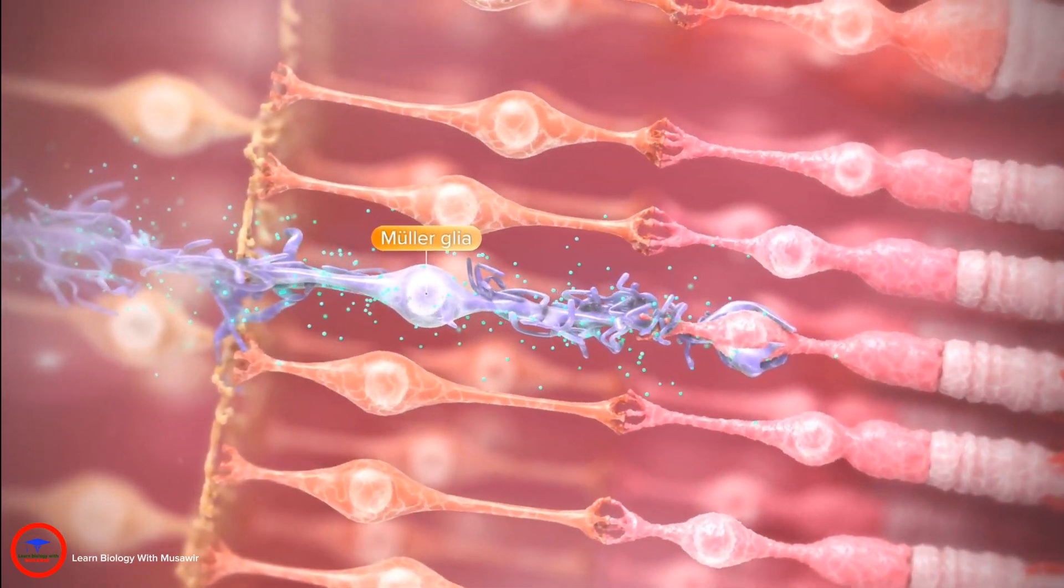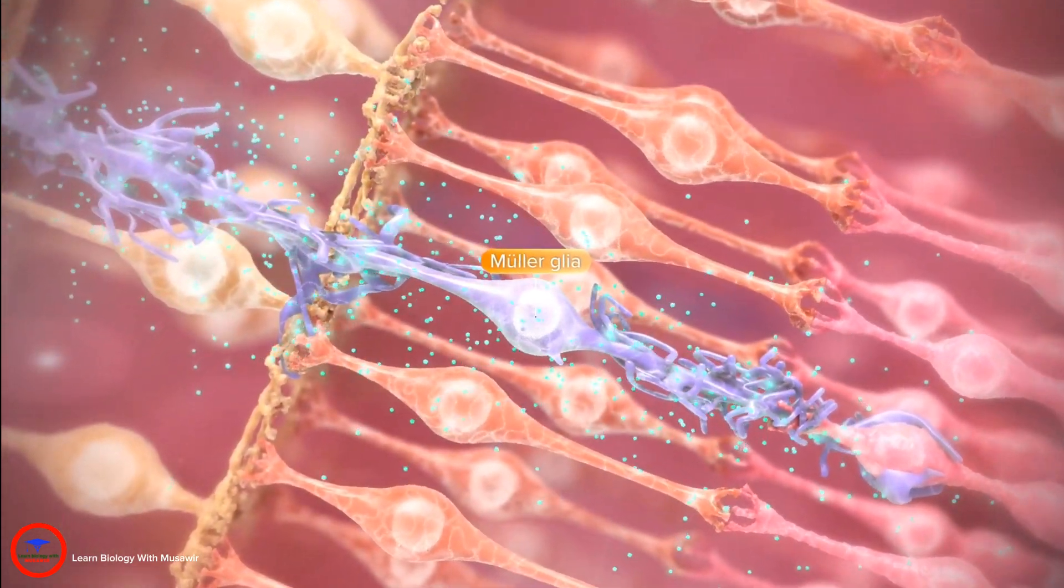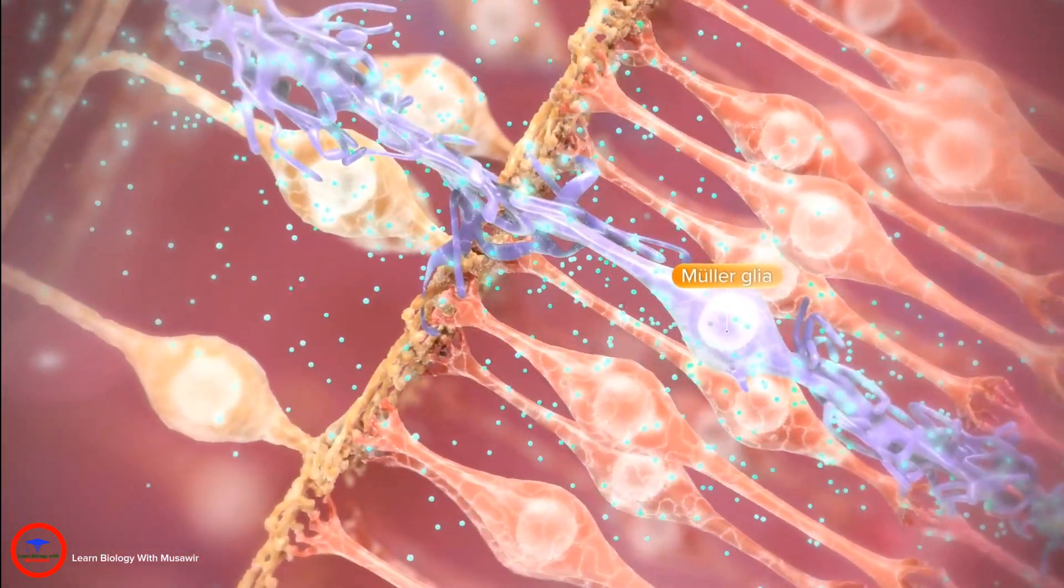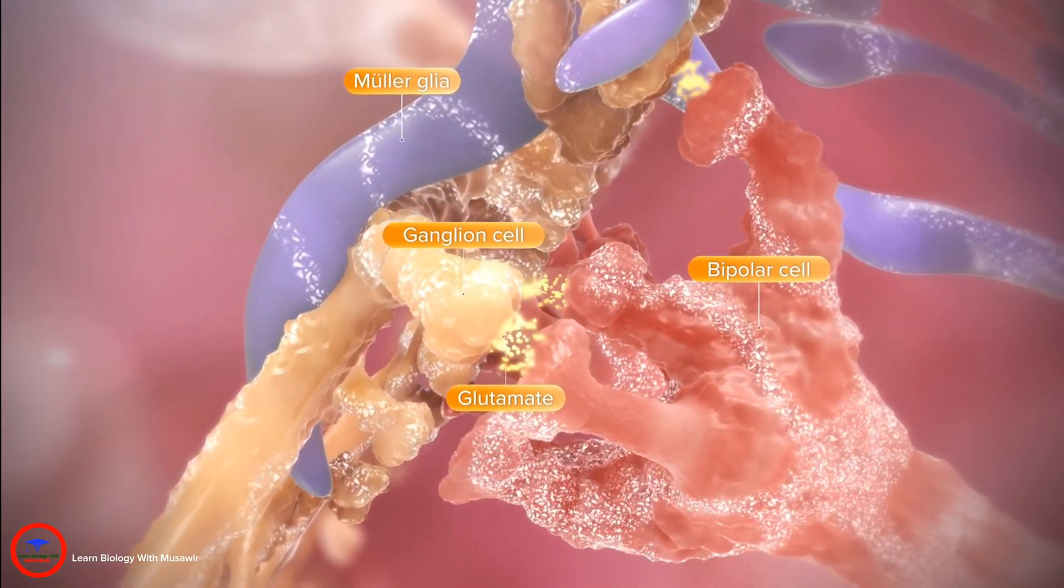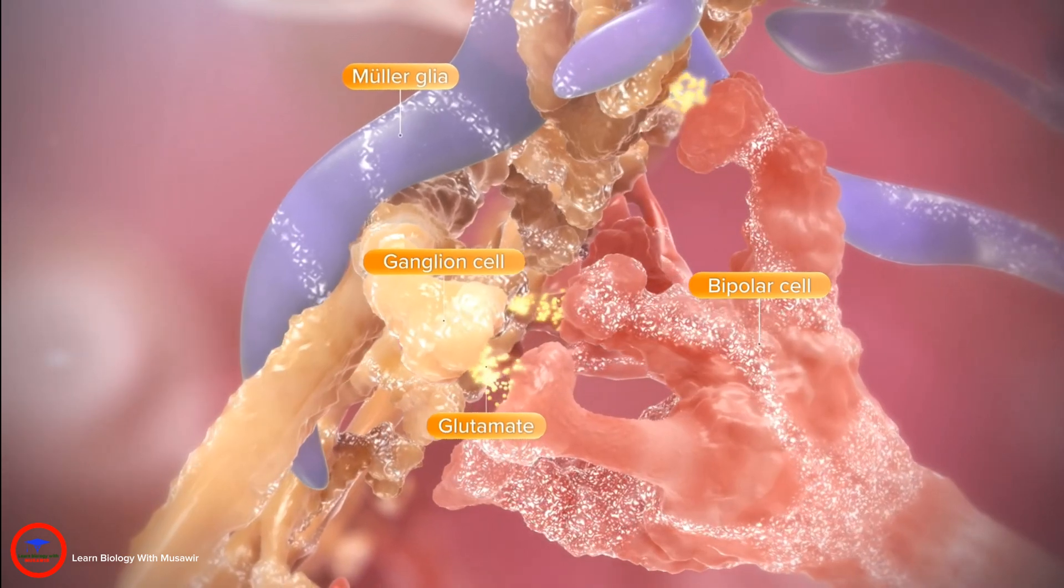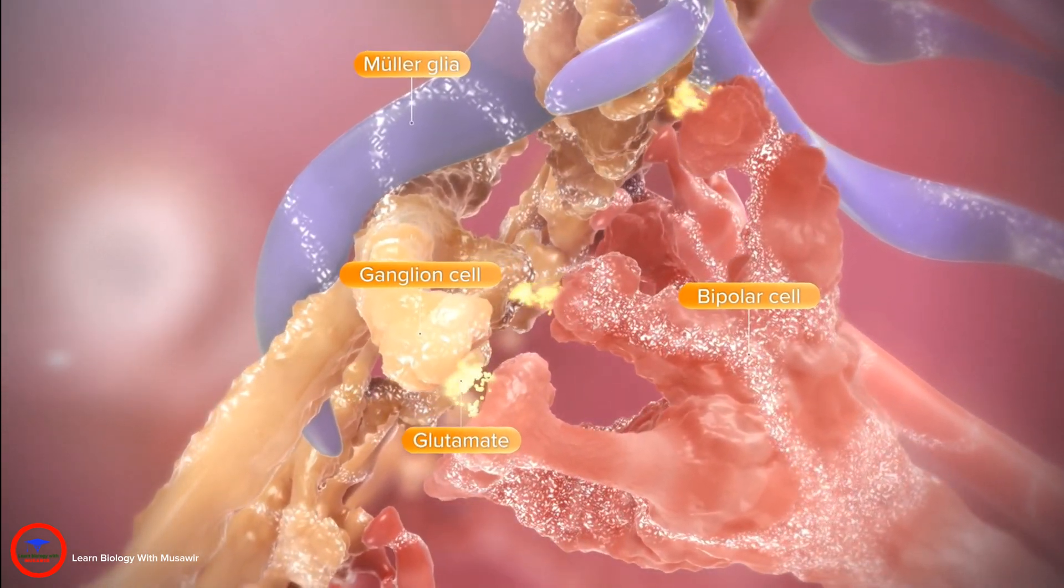Muller-Glier provide nutrients to photoreceptors and can phagocytose them if damaged. They also recycle glutamate, maintaining the fidelity of signal transmission and preventing retinal neurotoxicity.